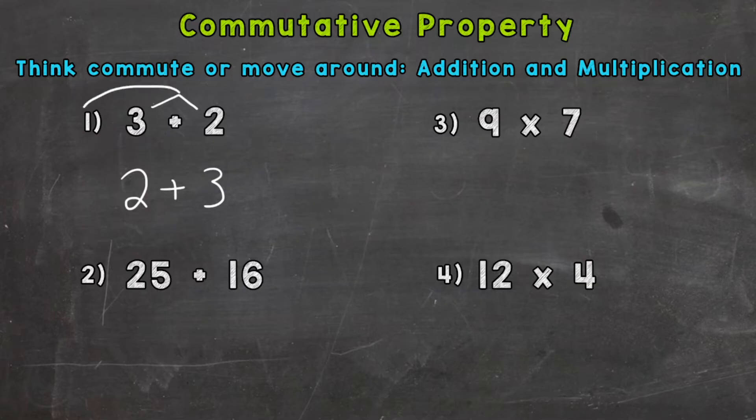We can switch the order and still get the same answer. Let's see if it works for number one: 3 + 2 is 5. Now let's switch or move around those addends and do 2 + 3.